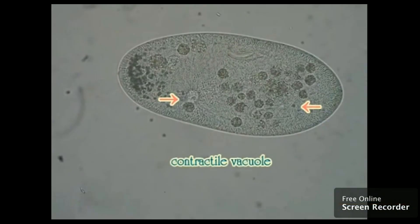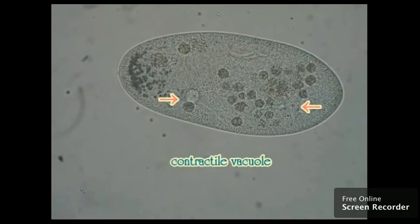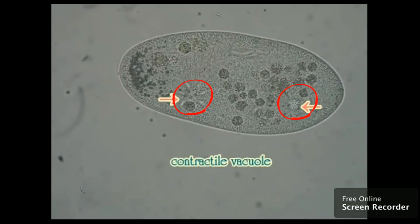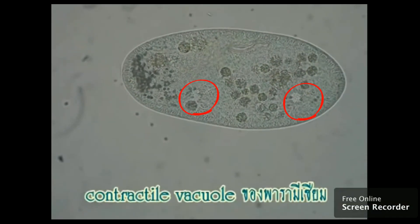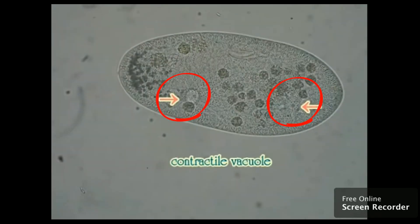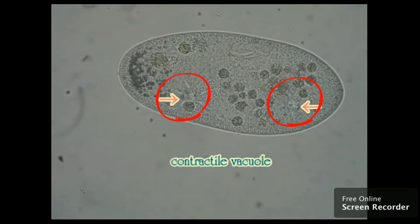Some single-cell protists have what is called a contractile vacuole, which opens and closes to regulate the amount of water inside the protist.